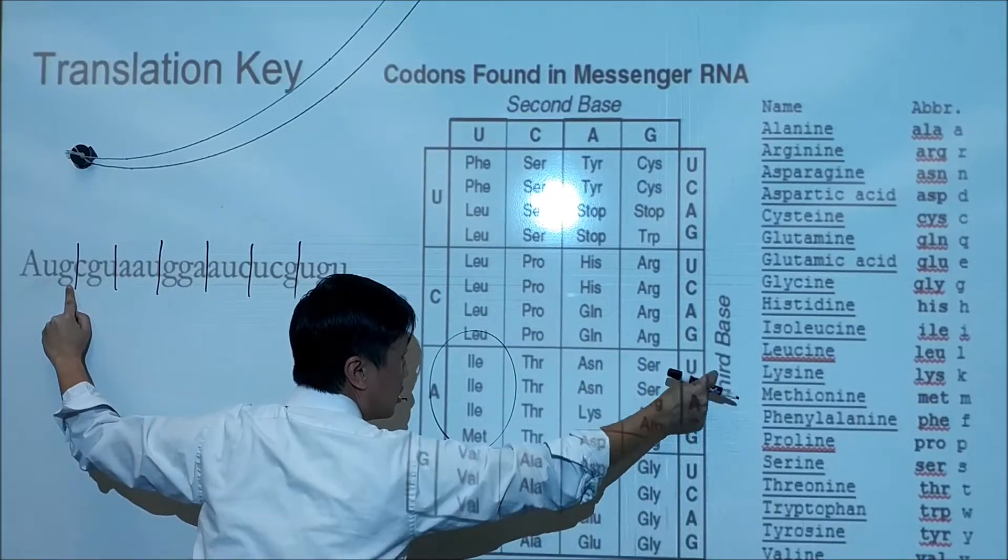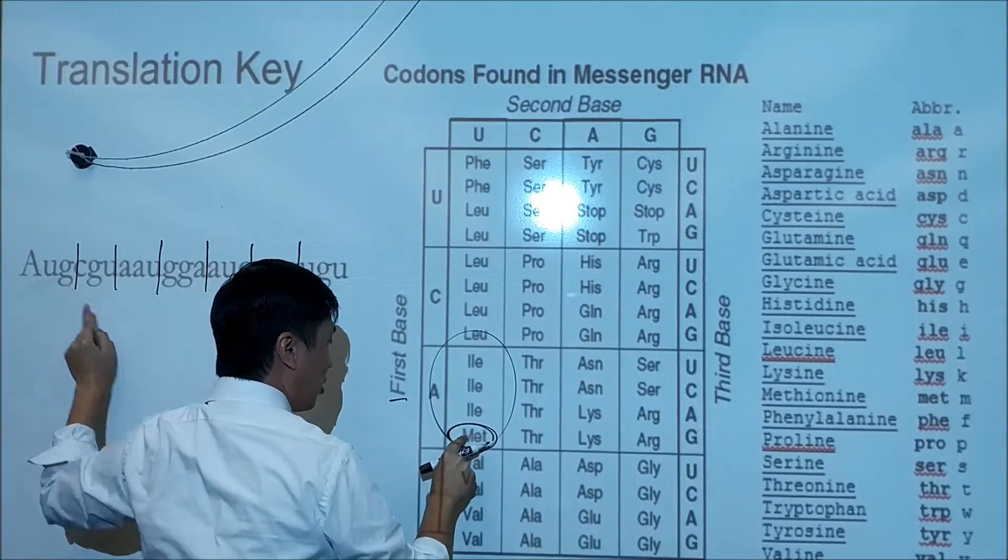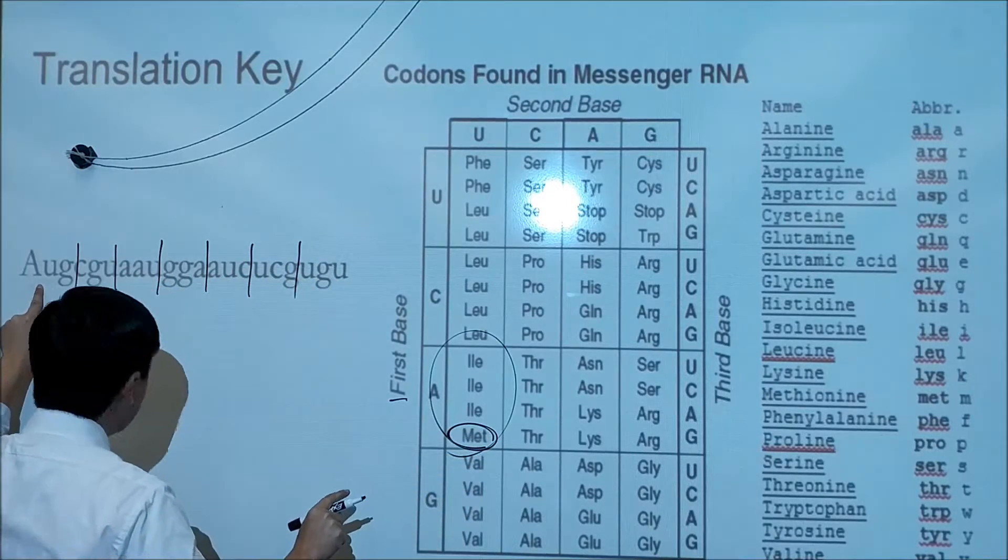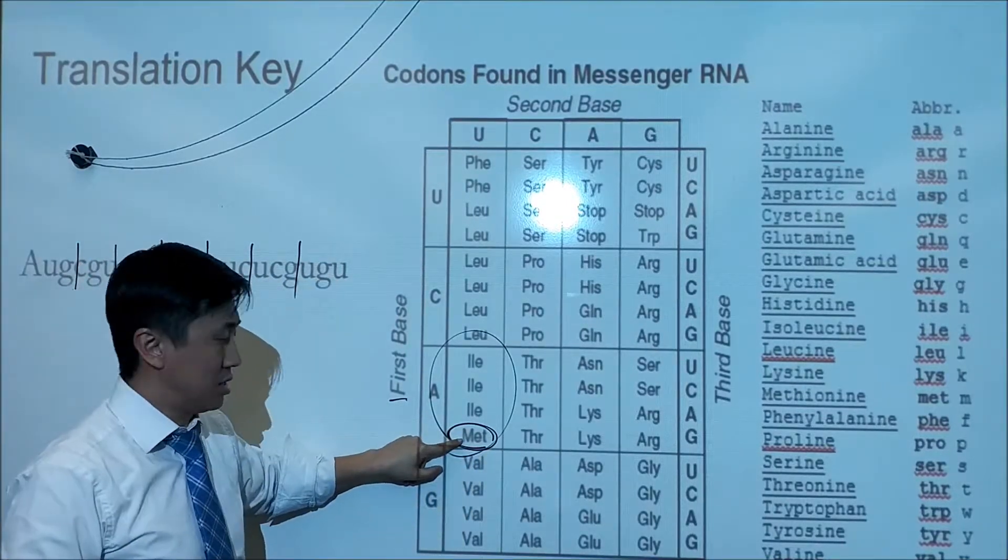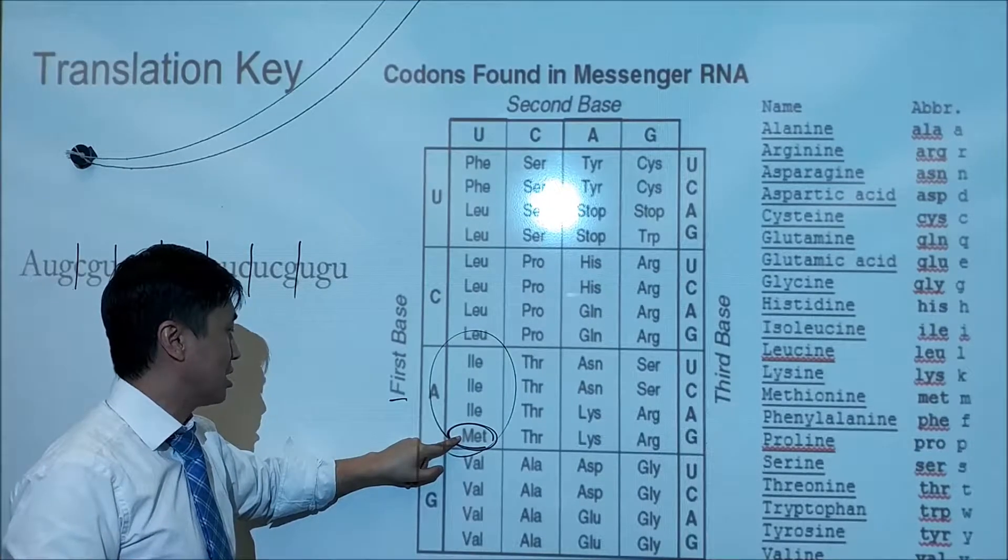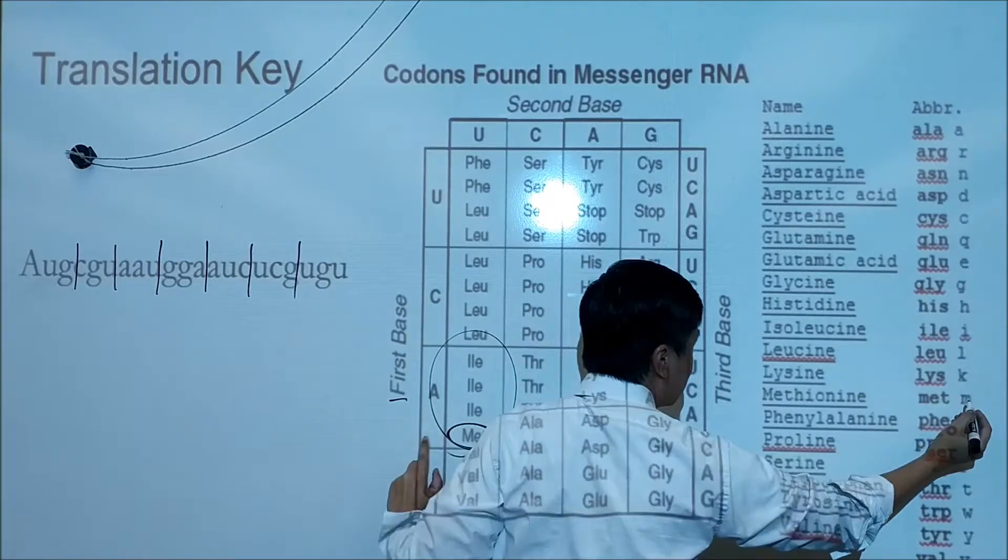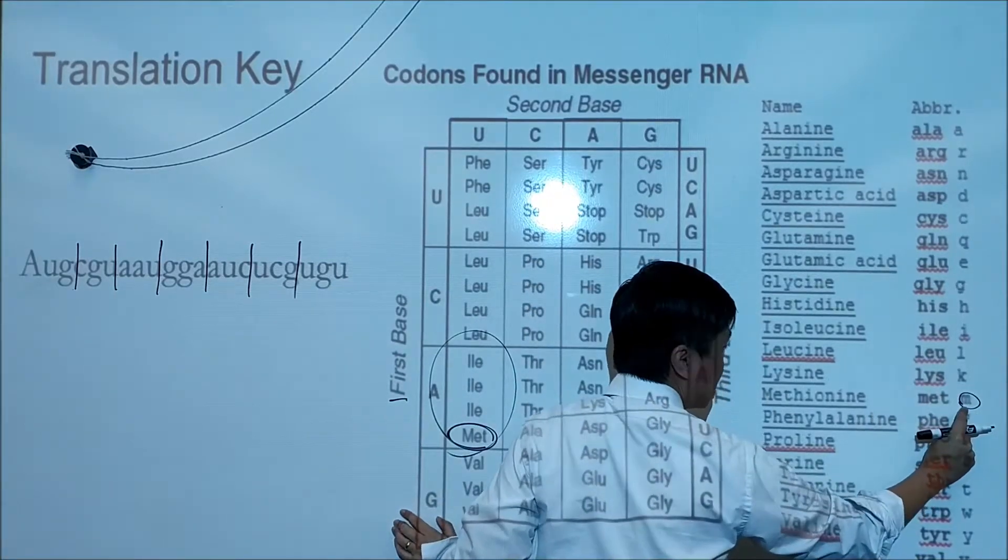It codes for an amino acid, a little portion of a protein. In this case, the amino acid is MET. Looking at this chart, MET is methionine, and the single-letter designation is M, so I'm going to write an M here.